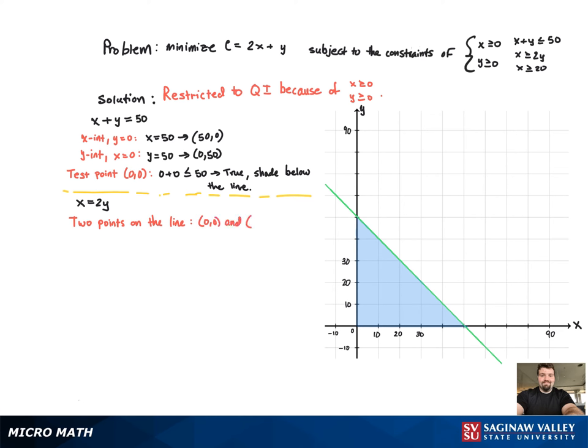So we're going to choose 0, 0, and we'll also choose 20 comma 10. So if we put those two points on there, we can graph the line.